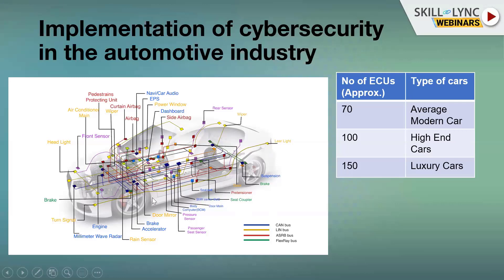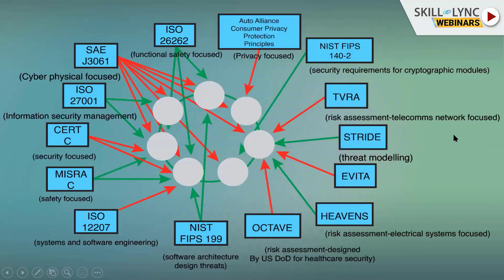As cars advance toward autonomous driving and electrification, the ECU count increases every year. The average modern car has around 70 ECUs, high-end cars have 100 ECUs, and luxury cars have 150 ECUs. With everything connected there are many gaps and system flaws that hackers can exploit to send manipulated data if security measures are not properly handled.